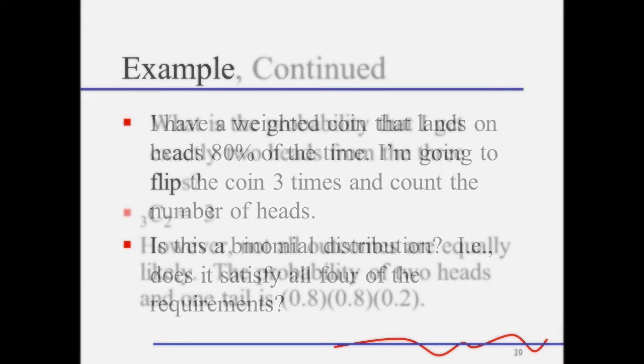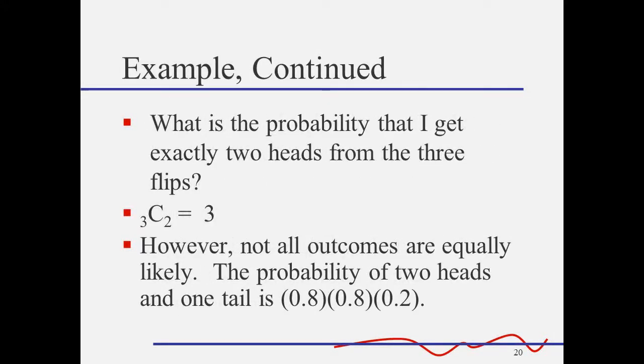What is the probability of exactly two heads? Again, I can find the number of ways that can happen by using the combination of three things choosing two. But now that all the outcomes aren't equally likely, we need to find a way to find the probability of two heads and one tail. And that's the multiplication rule. So we use that to multiply 0.8 times 0.8 times 0.2.